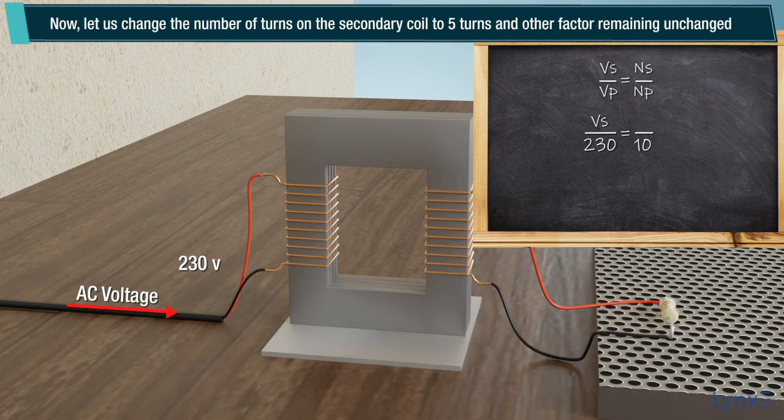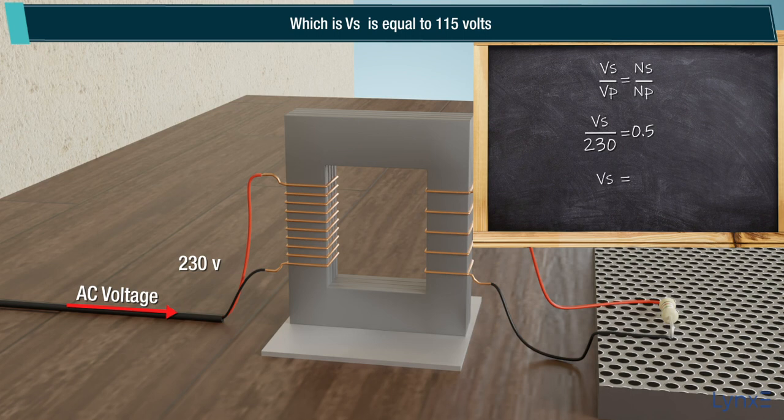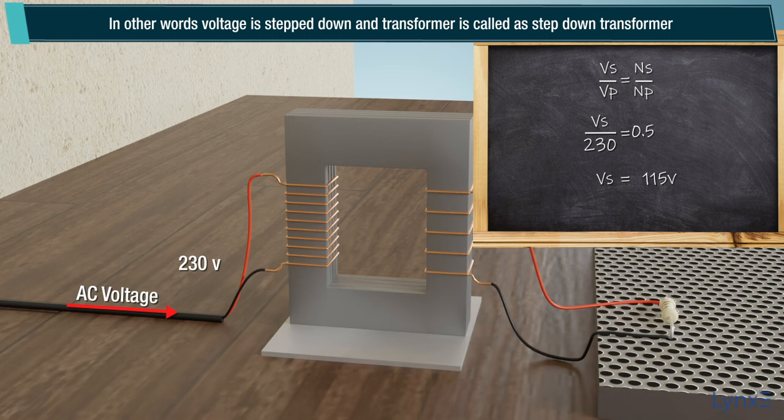Now, let us change the number of turns on the secondary coil to 5 turns, and other facts remaining unchanged. Now, we see the voltage of secondary coil dropped to half of the primary coil, which is Vs equals 115 volts. In other words, voltage is stepped down and transformer is called a step down transformer.